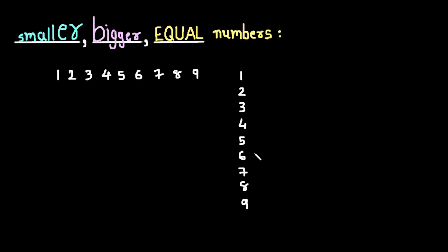This way we can compare numbers, and we have some signs — or symbols — to show this comparison. For smaller, we will use this symbol. For bigger, we can use this symbol. And for equal numbers, we use the equal-to symbol.